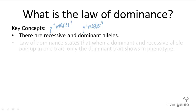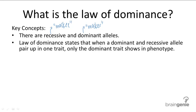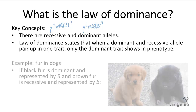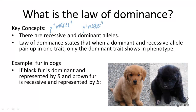This is exactly what the law of dominance states: when a dominant and recessive allele pair up together in a genotype, only the dominant trait will show in the phenotype. So let's return to our dog fur example. If the black fur allele is represented by a big B and is dominant, and the brown fur allele is represented by a little b and is recessive, you have three possible genotypes: BB, Bb, or bb.